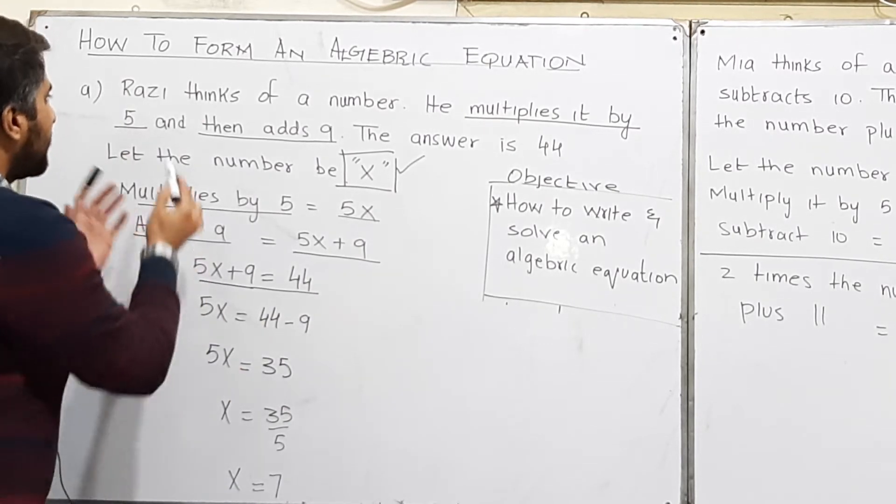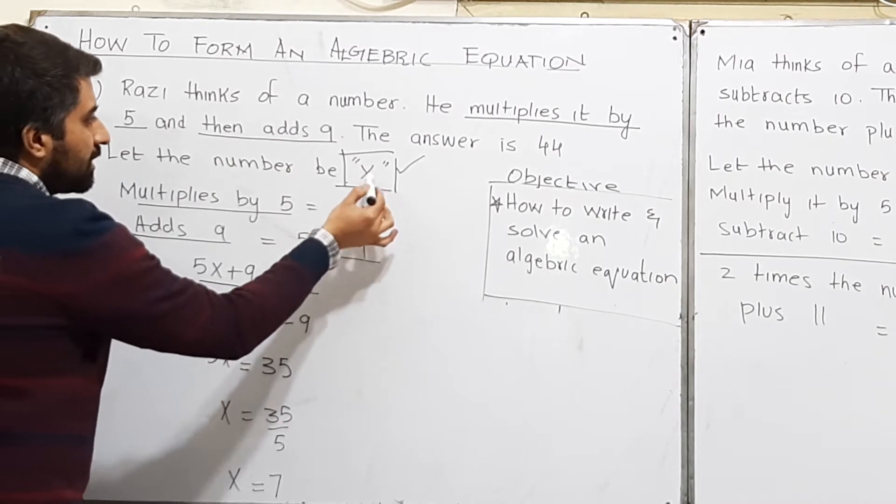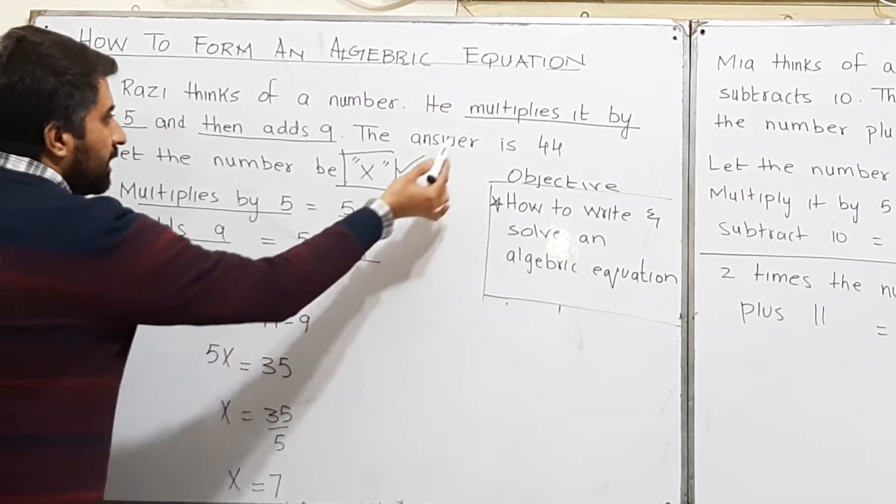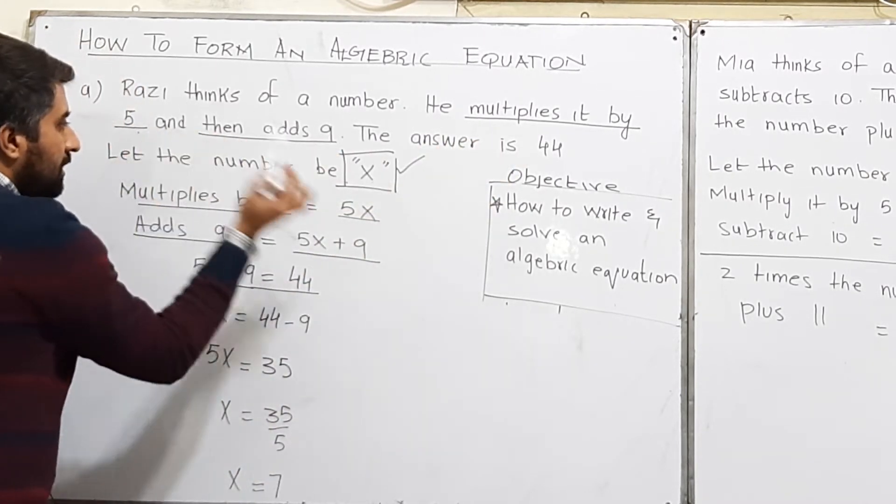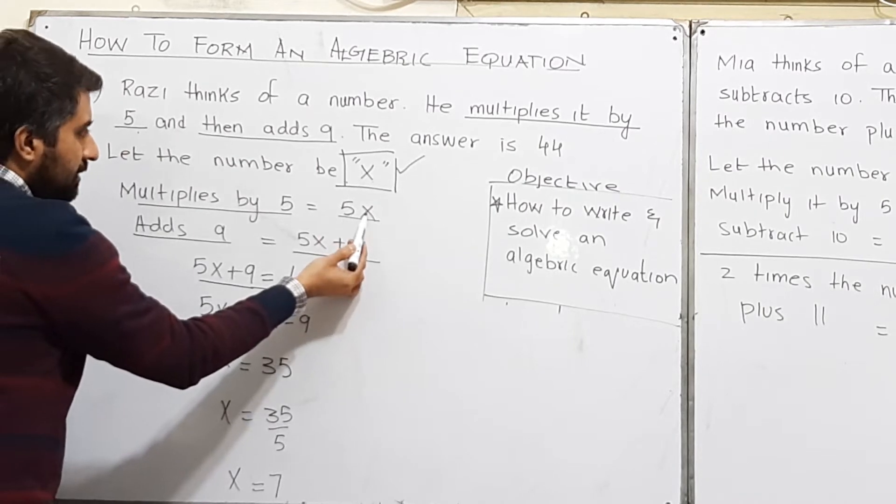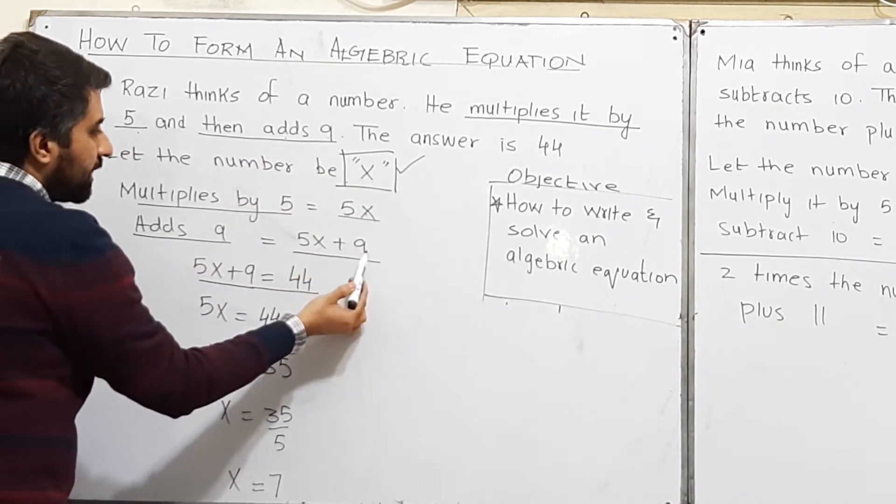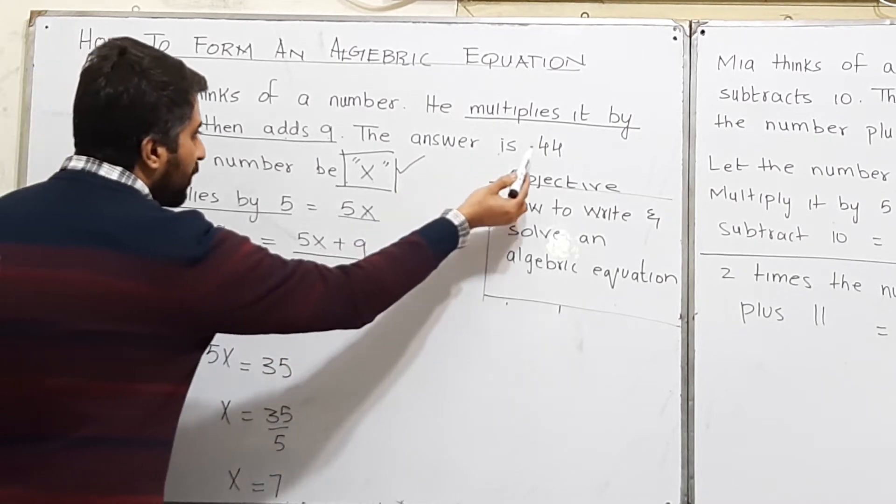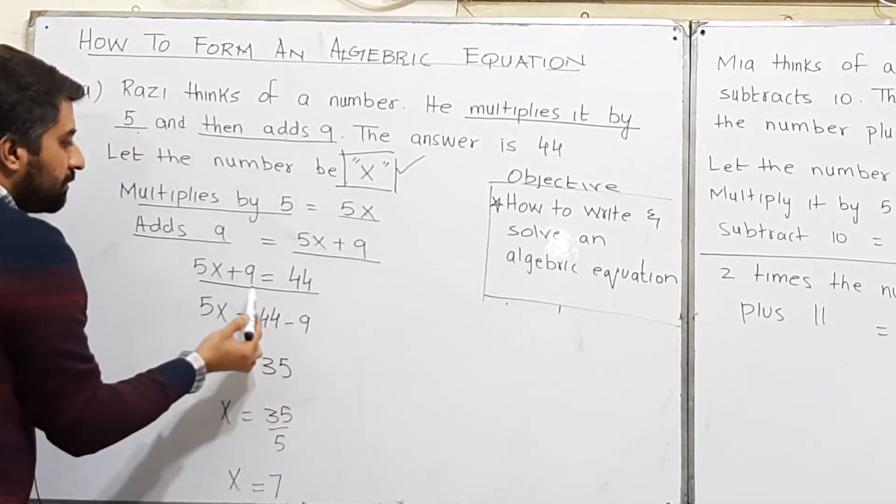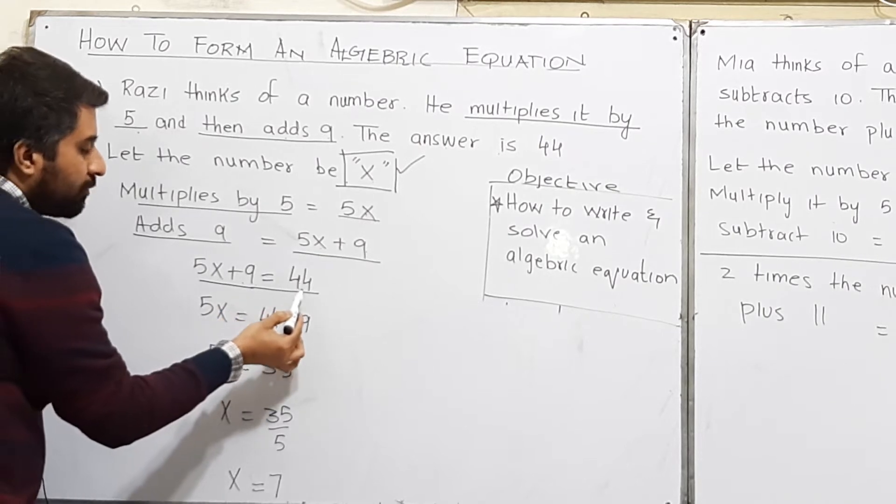Again I am repeating that Raji thinks of a number. Let the number be x. He multiplies it by 5, which will become 5x, then adds 9, it will become 5x plus 9. The answer of all this is 44, meaning 5x plus 9 equals 44.